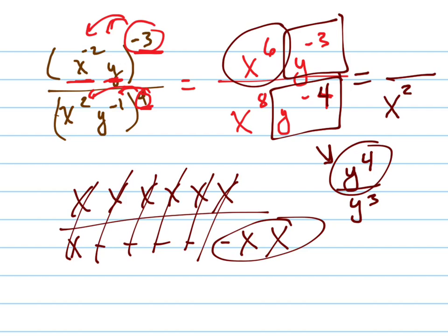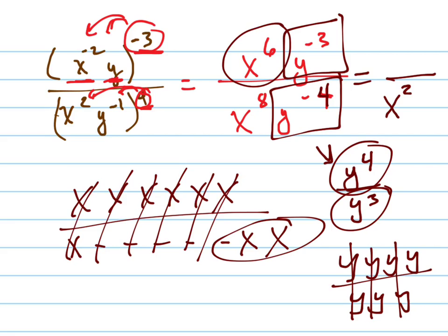But now do the same thing. How many y's do you have on the top and how many on the bottom? You have 4 on the top, 3 on the bottom. So again, you don't do this every time, but I'm helping you think through it. That's really what's happening. And you have 1 left on the top. So that's your answer.